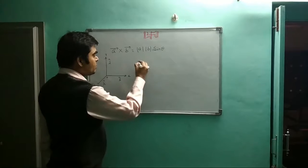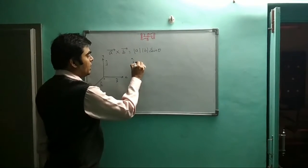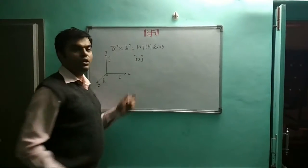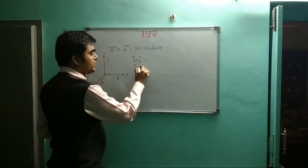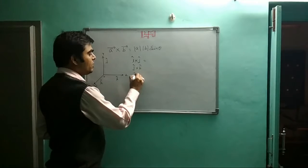For A × B, we have i cross j, j cross k, k cross i.